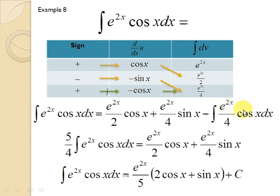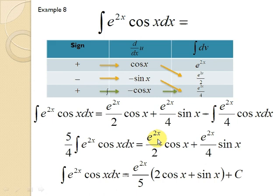You can see that e^(2x) cos(x) on the right-hand side matches the left-hand side. We add this term to both sides, giving us 5/4 times the integral of e^(2x) cos(x) dx equals e^(2x)/2 times cos(x) plus e^(2x)/4 times sin(x).